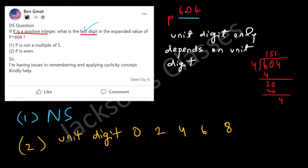By the divisibility rule, a number is divisible by 4 if its last two digits are divisible by 4 — and 04 is divisible by 4, so 604 is divisible by 4. Now, if the unit digit of p is 0, then p to the power 604 will have unit digit 0 — for example, 10 to the power 604 ends in 0.